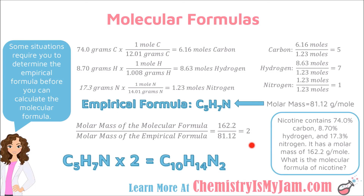The whole number 2 is what I multiply the empirical formula by. The empirical formula had 5 carbons times 2 = 10 carbons, 7 hydrogens times 2 = 14 hydrogens, and 1 nitrogen times 2 = 2 nitrogens. So the molecular formula for nicotine is C10H14N2. The empirical formula for nicotine, with those values ratioed down to their smallest form, would be C5H7N.